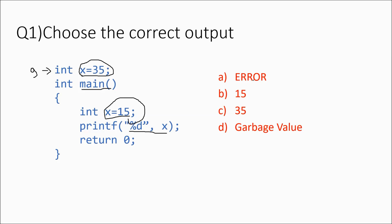Option A: will we get an error? Option B: 15, which is initialized locally. Option C: 35, which is the global variable. Option D: some garbage value. If you think the answer is 35, you are wrong. Garbage value is also wrong. The answer lies between option A and B — you will get 15, and you are not going to get an error.